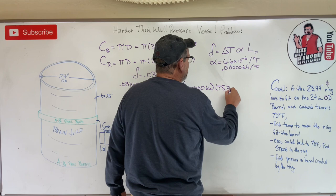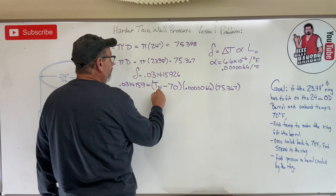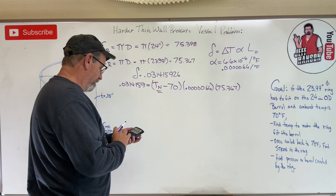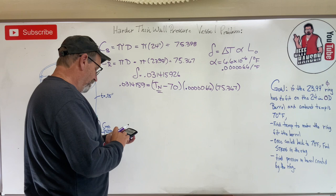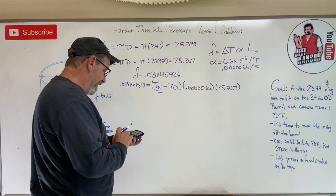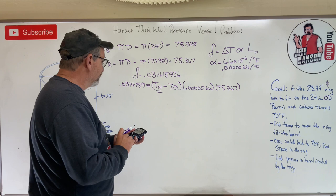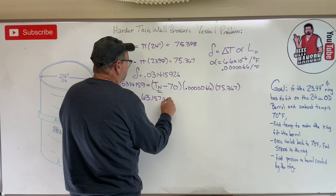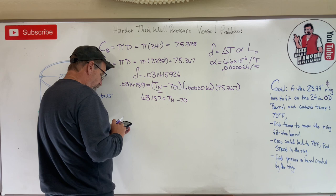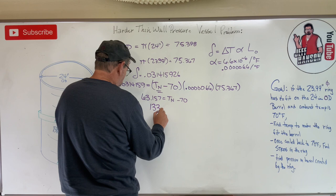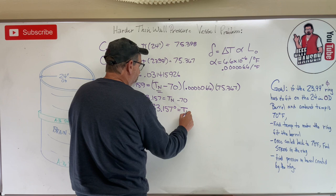All right, let's go team. This is what we're looking for, because new temperature is the one that's going to make that band fit on our barrel. So here we go: 0.031415926 divided by 0.00000656 divided by 75.367 equals 63.157, which equals T new minus 70. So move the 70 over, plus 70 equals 133.157 degrees F.